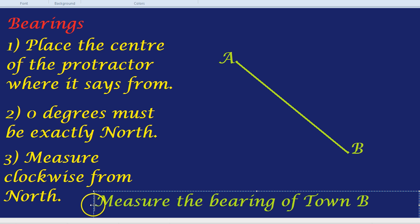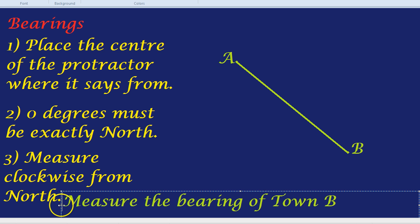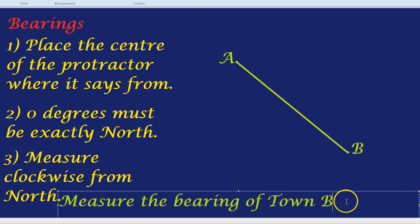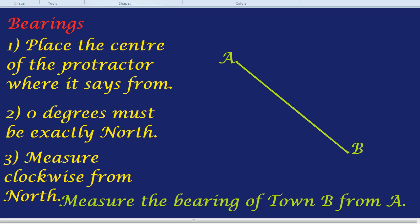Okay, now notice it said from town A. Let's just say from A, meaning town A. It's so important where it says from that I'm going to actually highlight that. It said from A and that is where, according to step one, we must place the center of our protractor.